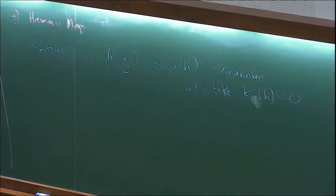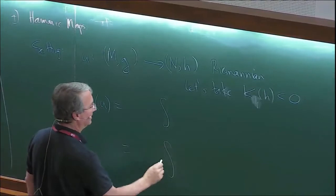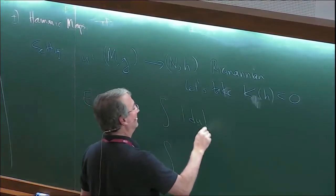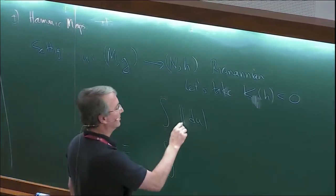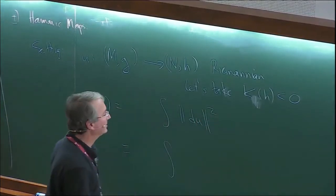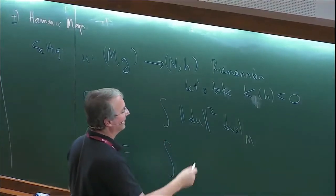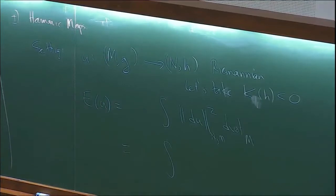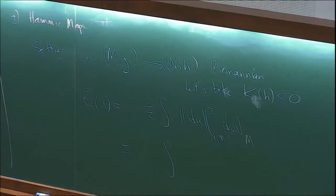Given a map, we can measure its so-called energy. The energy of a map is the total amount of energy density. The energy density: look at the tangent map du, take that as a map between tangent spaces, look at the norm of that, square it, and add it up with respect to the volume on the domain. Put a one-half in front for historical reasons.